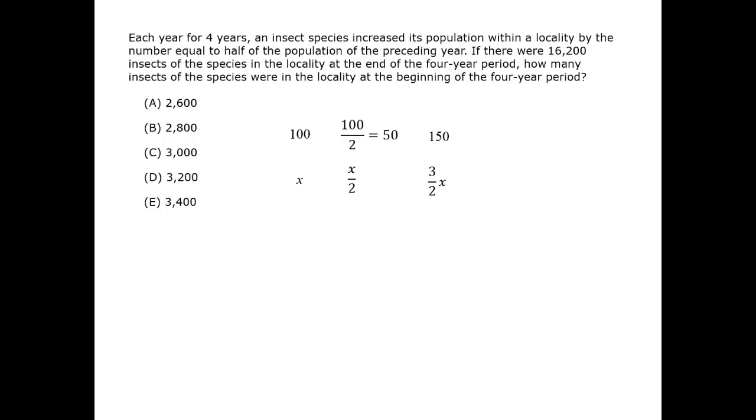One way of working this problem would be to make a table of the insect count per year and work it in this fashion either backward from 16,200 or forward from a variable.